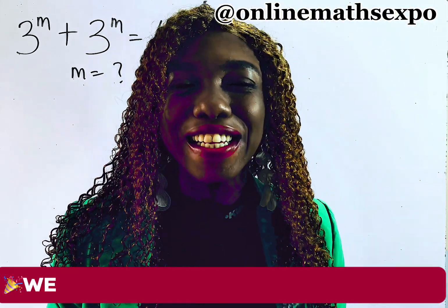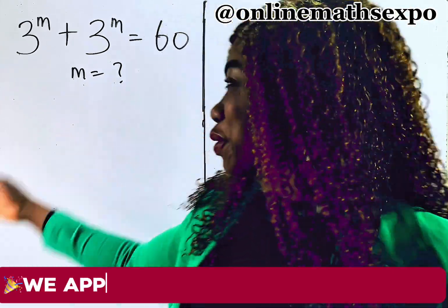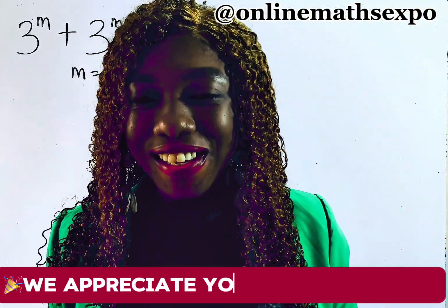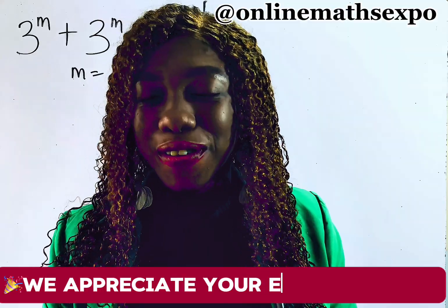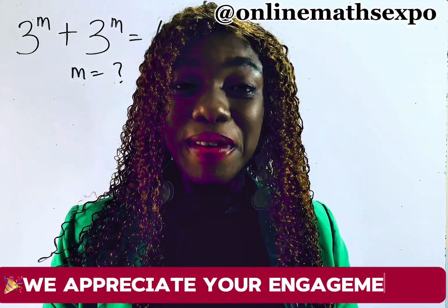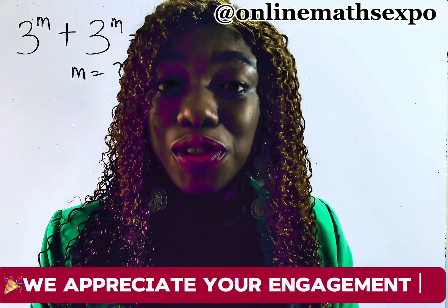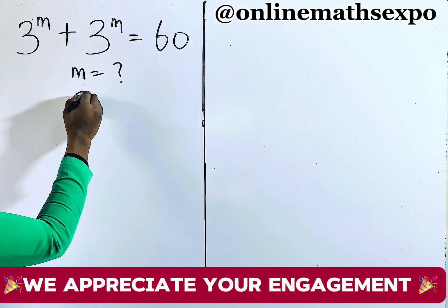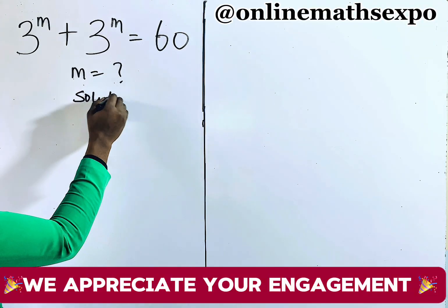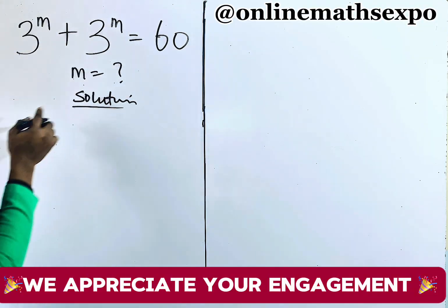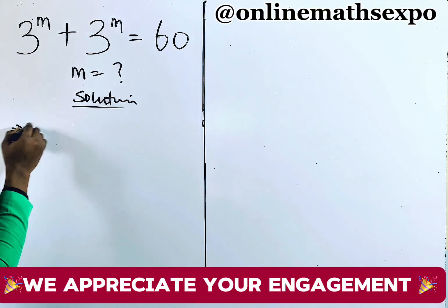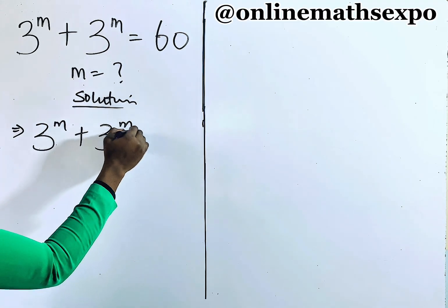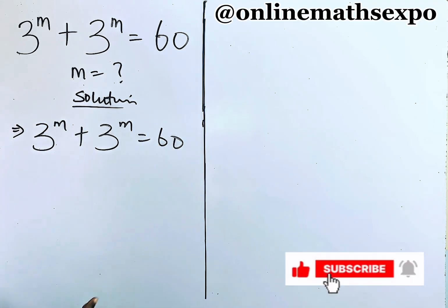Welcome, amazing one, and let's solve this beautiful equation together. It's just so easy. Let's do this together. So we're going to begin with our solution. Let's repeat what we have: 3 to the power of m plus 3 to the power of m is equal to 60.